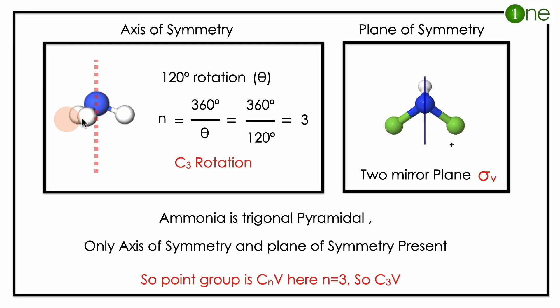To find the point group, you should imagine the molecule. Ammonia is trigonal pyramidal, basically nitrogen on top and you have hydrogen atoms. So you should know what way you can get the symmetry elements.